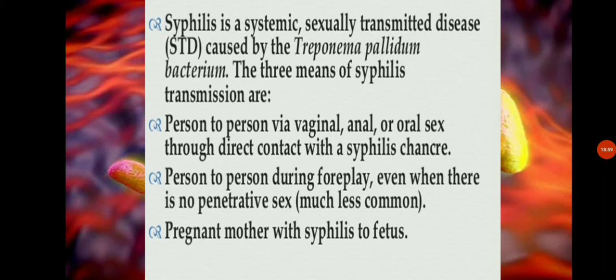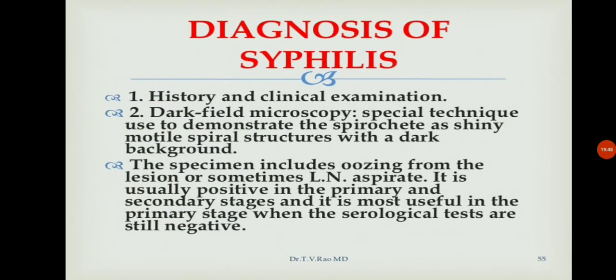The rash develops into sores with a loose or clear fluid containing infectious spirochetes. Without treatment, the second stage usually passes in 4 to 12 weeks. The third stage, called tertiary syphilis, usually occurs 3 to 15 years after the initial infection. The most common symptoms are soft tumor-like growths on the skin, bone, and liver.